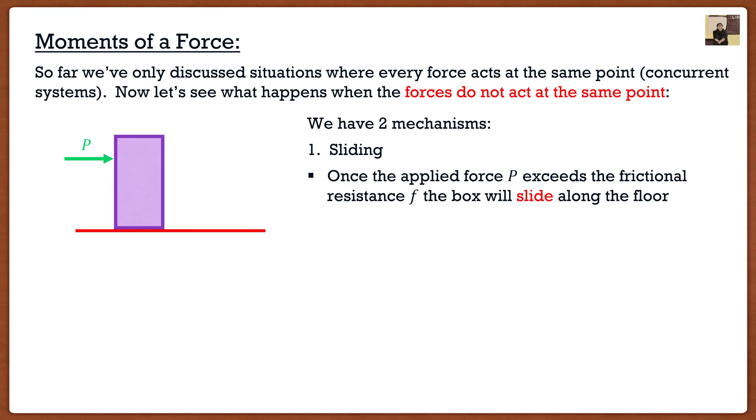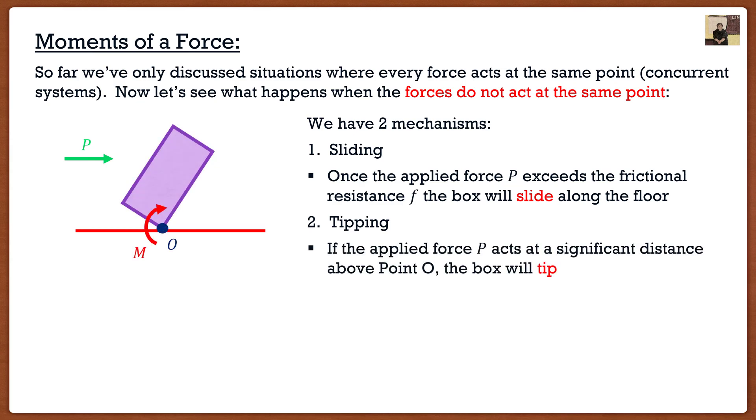Now, if I were to take that force and start moving it up the box, we are introduced to our second mechanism, which is going to be tipping. So if the applied force P starts to act at a significant distance above, of course, we know that the box is going to tip. In this particular case, the box is going to tip about a very specific point called point O. What happens is, with this force, we actually created something called a moment, because this force did not act through point O. We're now in a situation where we have forces that do not act through a point.